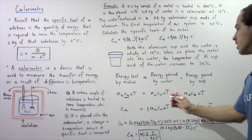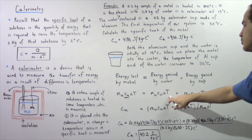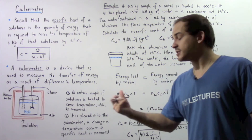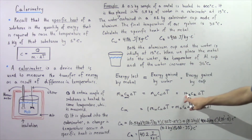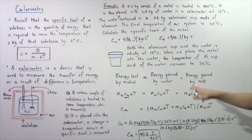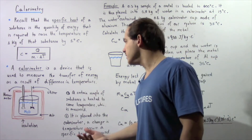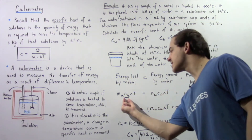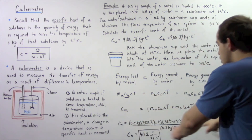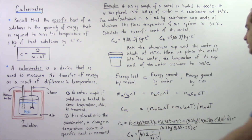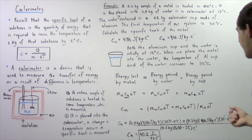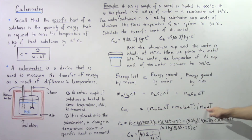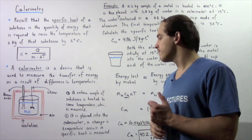Here, MW is the mass of the water, CW is the specific heat of water, and ΔT is the change in temperature the water experiences. Similarly, MA is the mass of the aluminum cup, CA is its specific heat, and ΔT is the change in temperature the aluminum cup experiences. Solving for the specific heat of the metal, we bring the water and aluminum terms to one side and divide their sum by the product of MM (mass of the metal) times its change in temperature.